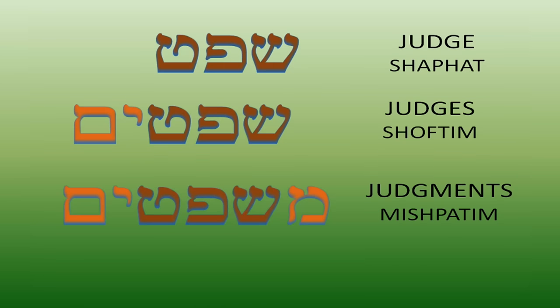Shafat by itself means a judge. If you make it plural, it's shoftim — you add the yud and the mem, that's like adding the S in English. And then if you say judgments in the plural, it is mishpatim. You just add the mem at the beginning. Judges is right there in judgments, just adding the mem. Words can mean his judgments, your judgments, my judgments — instead of being two words, they add a letter to the beginning or the end.